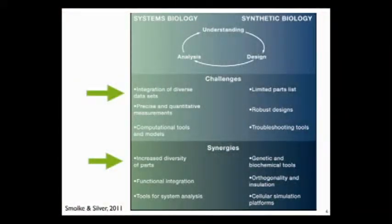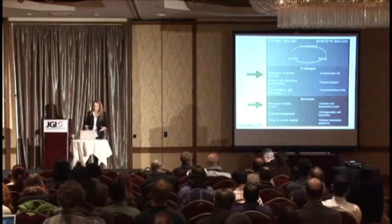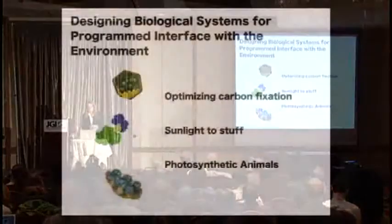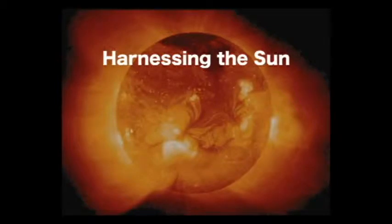This is from a review that just came out in Cell about systems biology. I was asked together with Christina Smolke to talk about challenges and synergies between systems biology and synthetic biology. Two points relevant to this audience: first, the importance of diverse data sets — this is where we get our parts to make biological systems; second, the increased diversity of parts, which gives us more tools to design ever more complex systems. I'm going to talk about our efforts to optimize carbon fixation, use sunlight to make stuff, and for your entertainment, our attempts to make photosynthetic animals.